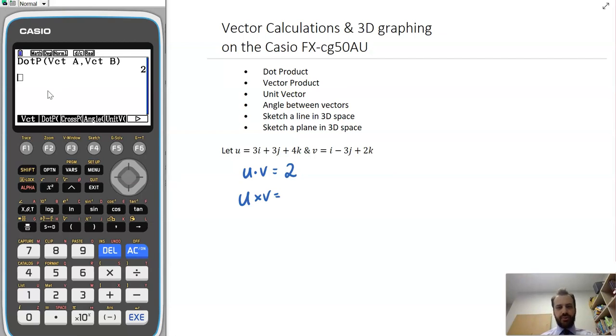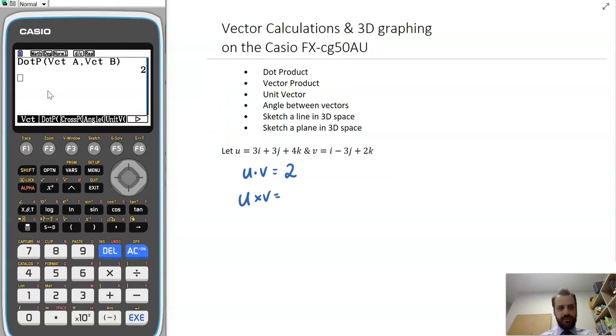What about the cross product? Well, I can type it all in again, but I might just arrow up. And then change this dot product to a cross product like that. Make sure my brackets link up. And you can see it spits out my answer, 18i, negative 2j, negative 12k.